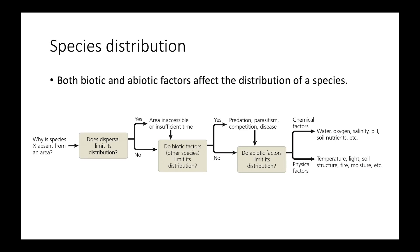This video is going to be about species distribution. There are a lot of factors, both biotic and abiotic, that affect the distribution of a particular species. As you can see from this diagram, things like abiotic and biotic factors, predation, chemical factors, and physical factors all come together to ultimately determine whether or not a species is going to be able to survive in a particular environment.